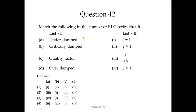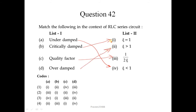Question number 42: match the following in the context of RLC series circuit. The damping ratio zeta: for underdamped, zeta should be less than 1. For critically damped, zeta should be equal to 1. The quality factor Q equals 1 upon 2 zeta. And for overdamped, zeta should be greater than 1. The correct sequence is 4, 1, 3, 2; option 3 is the correct one.